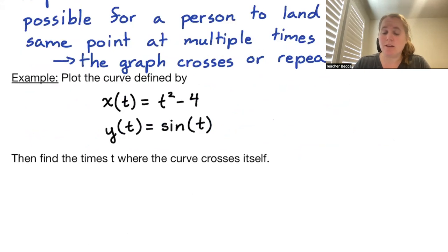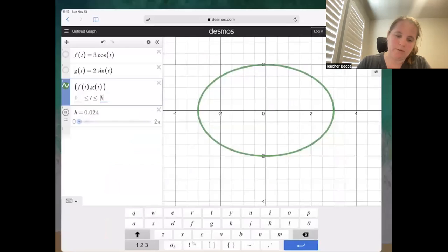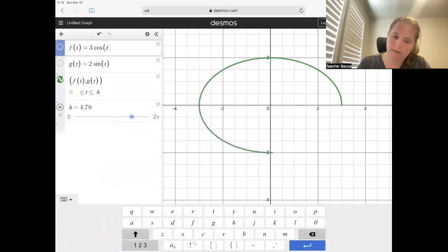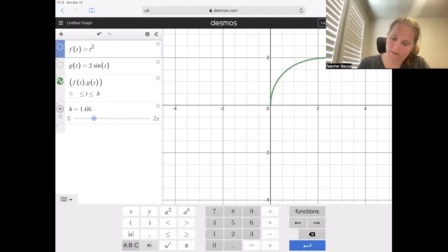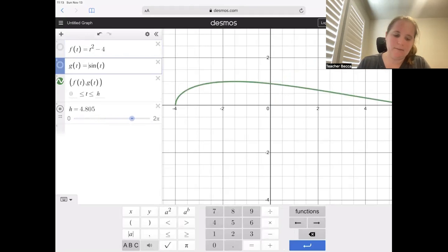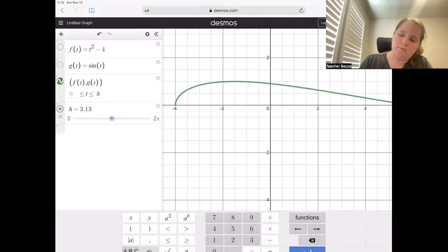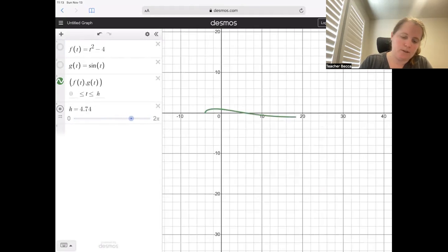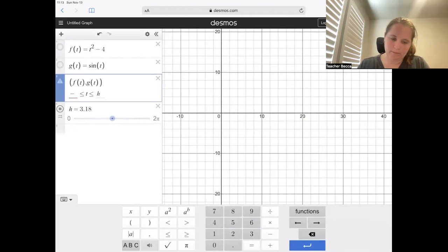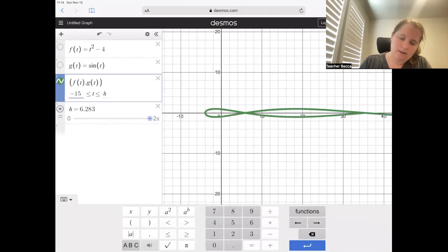So we're first going to plot this. We can do so in Desmos. So if we go back to Desmos, our f(t) was t² - 4 and our g(t) was simply sin(t). And then we don't want to limit ourselves from 0 to 2π. We can actually go negative as we choose. So let's go from negative 15. Or actually, since we have sine, let's do multiples of π.